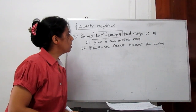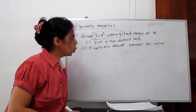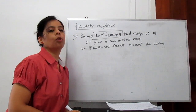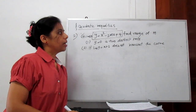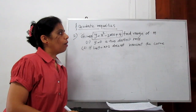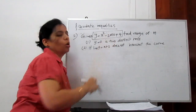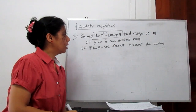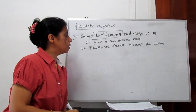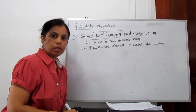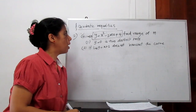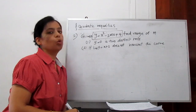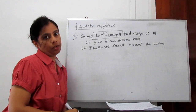Proceed to another example. Given: y equals x squared minus 2mx plus 4. Find the range of m. There is one unknown constant m. For condition number 1, we need to satisfy the condition that y equals 0 has two distinct roots.